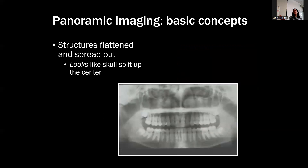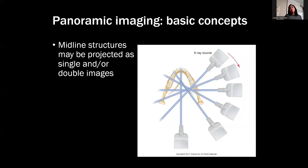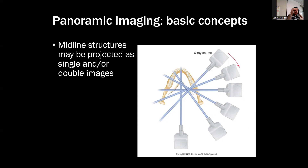The structure of a pano is basically thinking of your head split down the back and then folded flat. You're looking at a curved 3D image flattened to 2D, so there are layers of things. It brings your ramus, condyle, and coronoid process all out and flattens it. This is an image showing how it projects around the mandible, and at the midline in the center, you can get either a single image or a double image of something - called a double real image - because the source can end up hitting the same area twice as it comes around.